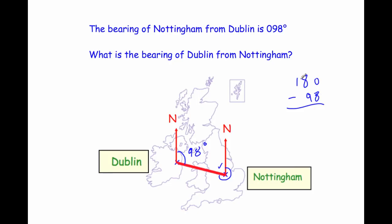Working that out: 180 minus 98. Borrowing through the subtraction, that gives us 82 degrees. So this inner angle here is 82 degrees.